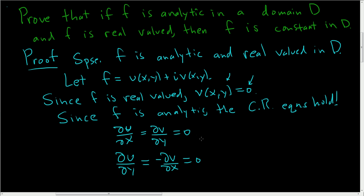So you have these partial derivatives, and they're all zero in D at every point in D. So this implies that U and V are constant in D, and so the sum is constant.